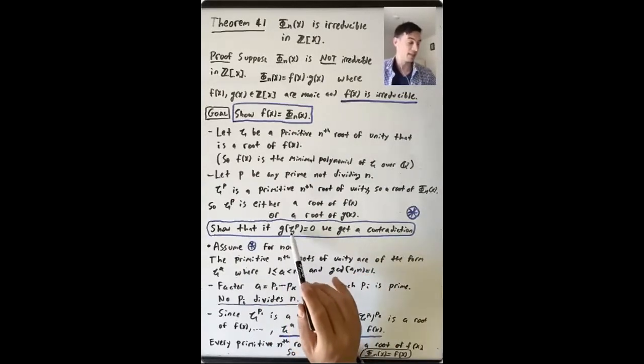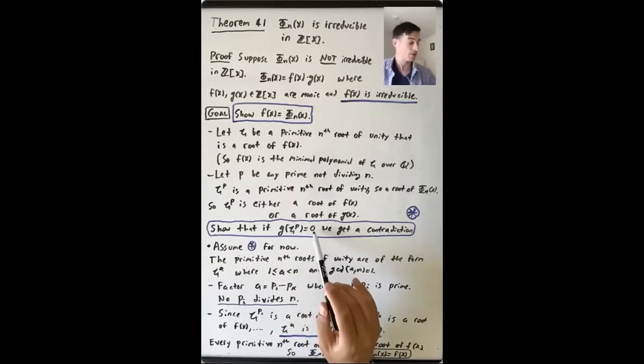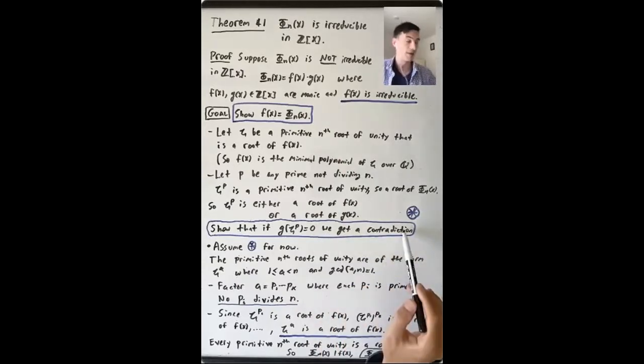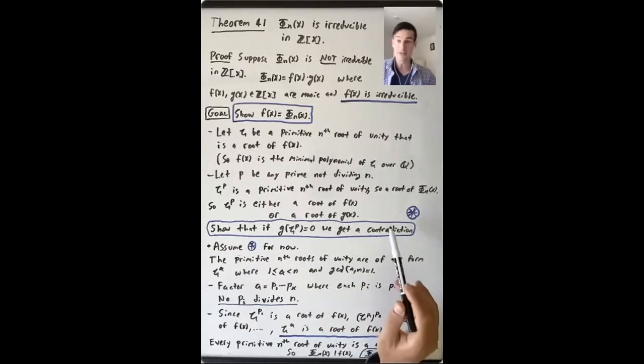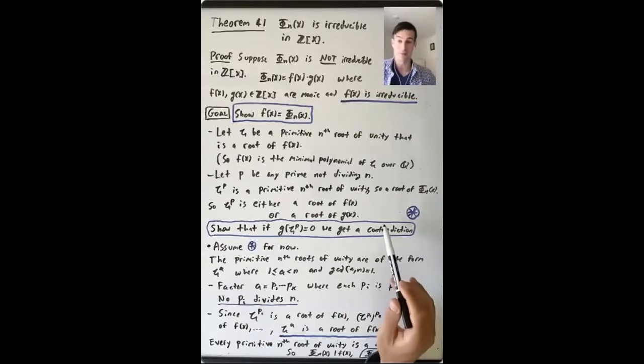If g(zeta^p) equals zero, then we get a contradiction. Let's assume this for now and see the rest of the proof.